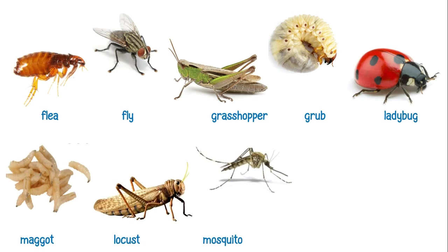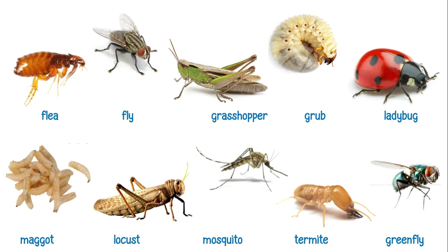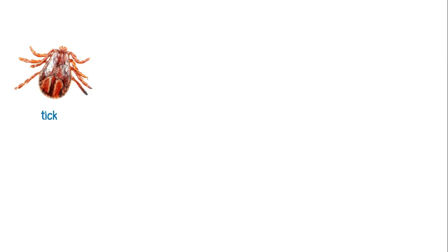This is a locust. This is a mosquito. This is a termite. This is a green fly.